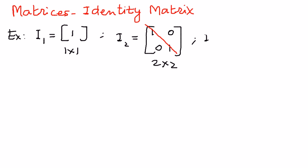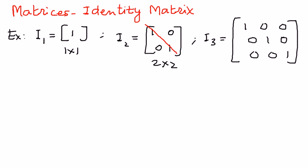Let's take another example. Let's say I3, which is an identity matrix. In here we will have 1s along the main diagonal: [1, 0, 0; 0, 1, 0; 0, 0, 1]. Along the main diagonal we have 1s, and elsewhere — above and below the main diagonal — all the rest of the elements are 0s. So this is a 3 by 3 matrix, which means it has 3 rows and 3 columns.